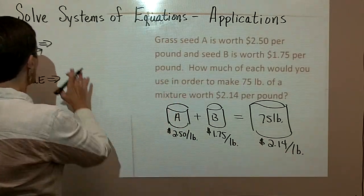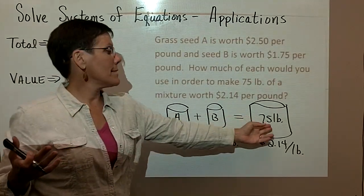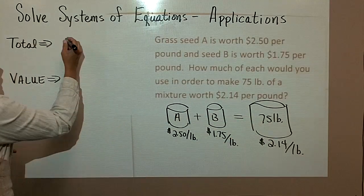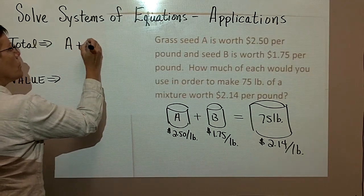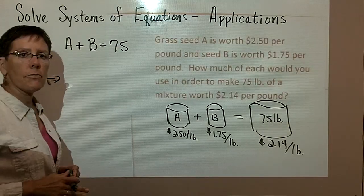But this problem lends itself very well to this thought process again. And that is, in total, I want 75 pounds. And that will be represented by grass seed A plus grass seed B for a total of 75 pounds.